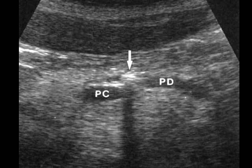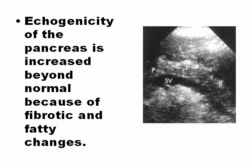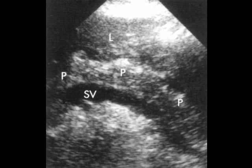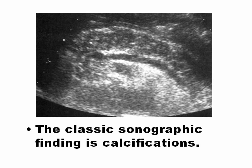You can also see the dilatation of the pancreatic duct. Echogenicity of chronic pancreatitis is increased because of fibrosis and fatty change. In ultrasound, chronic is hyperechoic and acute is hypoechoic. This is a typical ultrasound of chronic pancreatitis. The classic sonographic findings for chronic pancreatitis are calcifications.